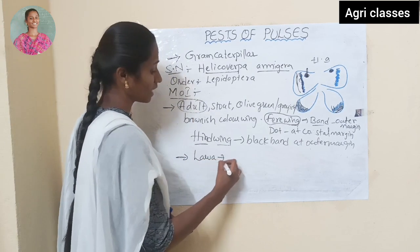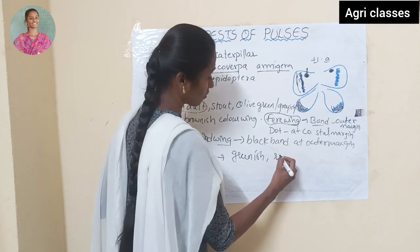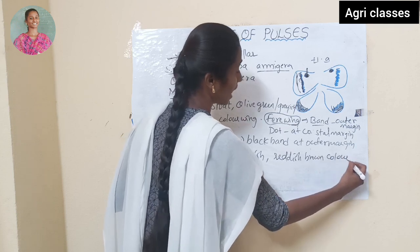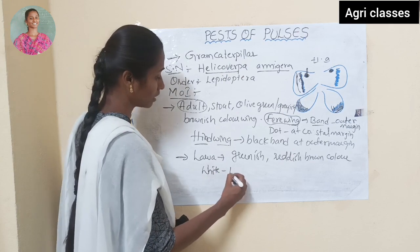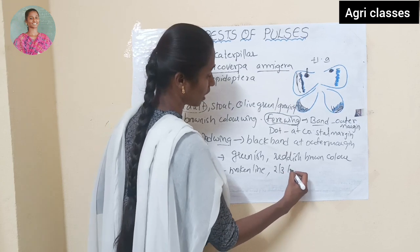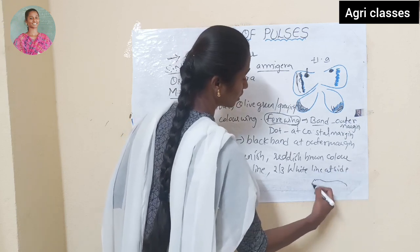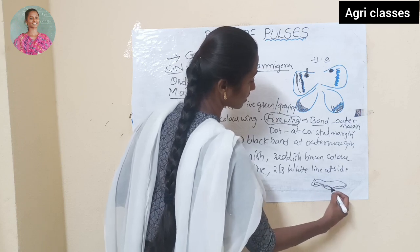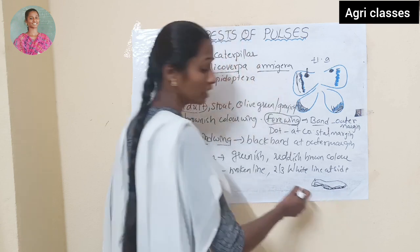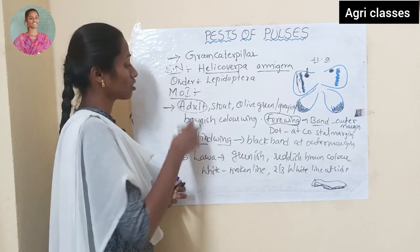The larvae are in different colours — greenish colour or reddish brown colour — and have white coloured broken lines, with two or three white lines at the sides of the body. Here in this picture we can see the two to three lines and broken white lines. The larva is cylindrical in shape and greenish or reddish brownish in colour. These are the marks of identification.